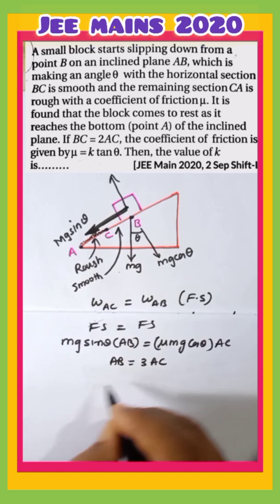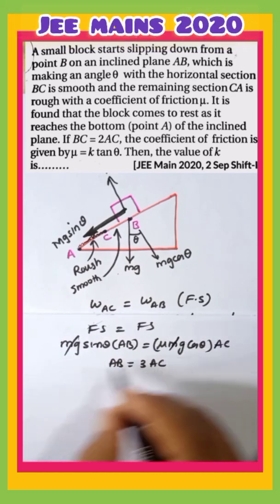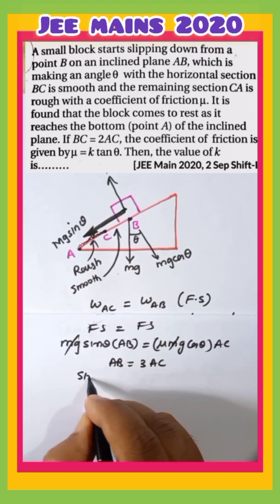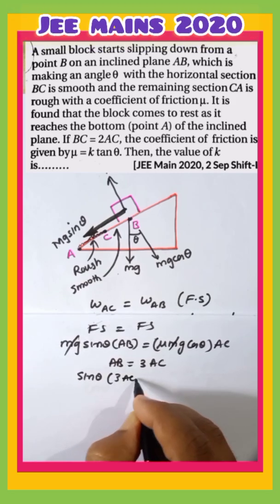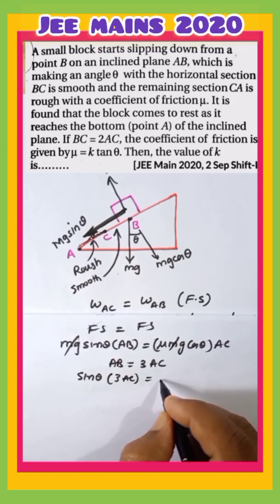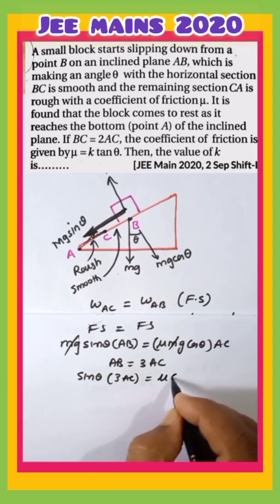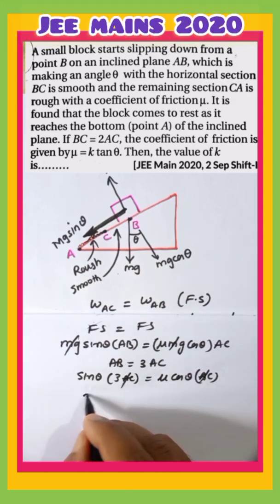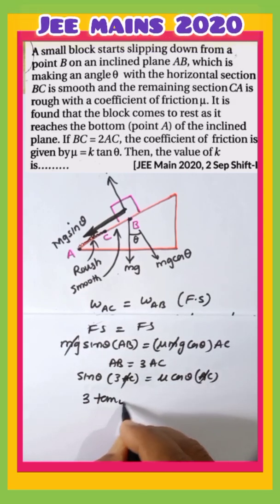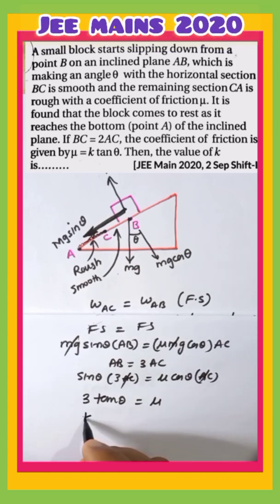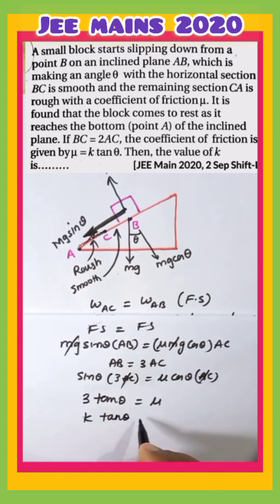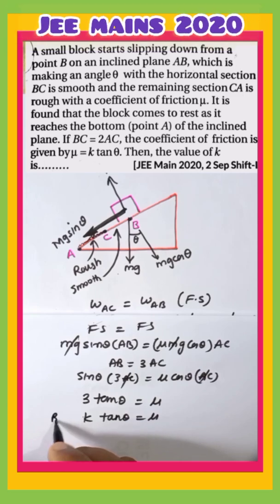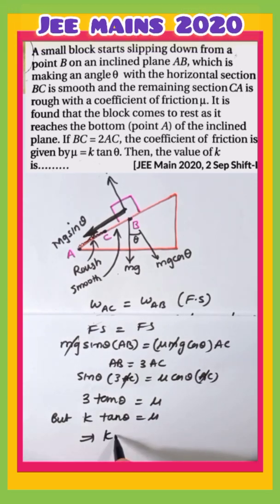In the problem it is given that AB is equal to three times AC. Substitute the value of AB as three times of AC, cancel out everything, and finally you get sinθ by cosθ, which is tanθ, equal to three times μ. But the problem's condition is given as k·tanθ = μ, so k is 1/3.